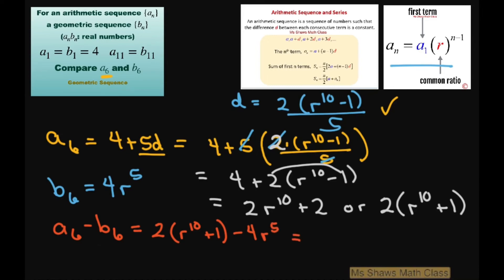This is going to be 2 times r^10 plus 1 minus 4r^5. I can simplify this and write this as 2 times r^10 plus 1 minus 2r^5.